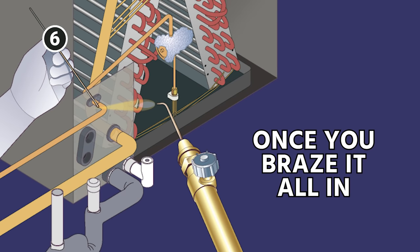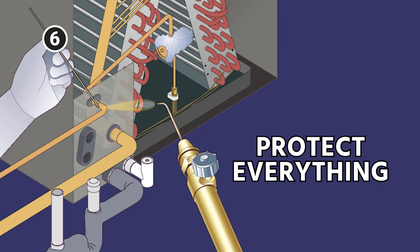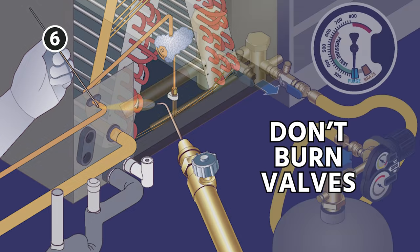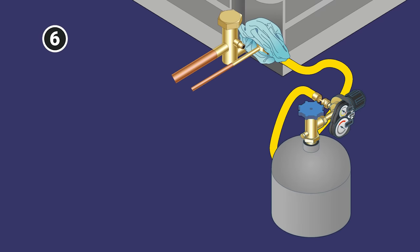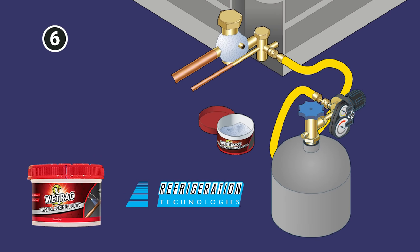Once you get everything all braised in properly, again, make sure you protect everything. You're not burning paint, you're not burning valves, you're flowing nitrogen. That's very important. The braising process is really critical on this. I like to use wet rag, even the product Wet Rag from Refrigeration Technologies to protect dryers.